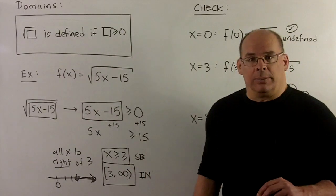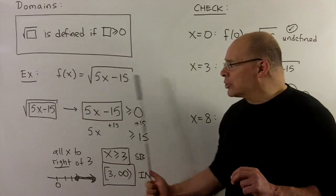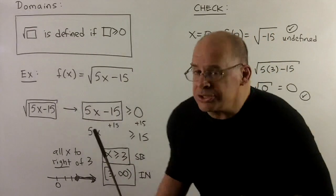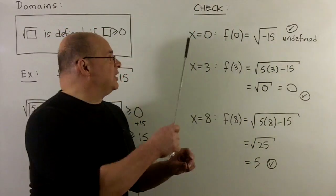We can check this a little bit. Typically we don't do the check, but just let's make sure that we're good with evaluating actual numbers in here. So for instance, if we put 0 in here, well I'm going to get square root of minus 15, which is undefined.